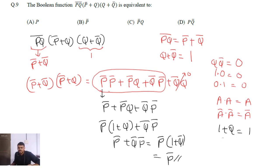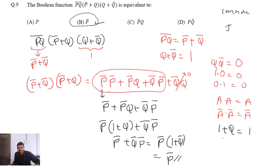So the boolean function (pq)̄ · (p̄ + q) · (q + q̄) is equivalent to p̄, which is option B. The right answer is option B, and this is one more question asked in JAM 2020.